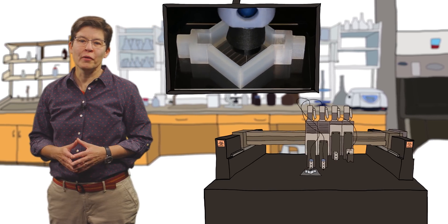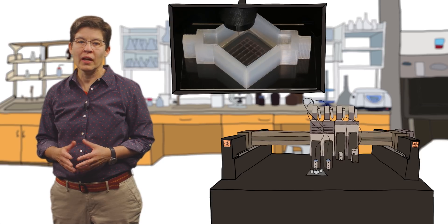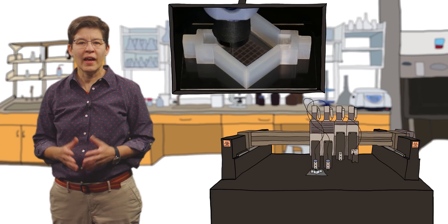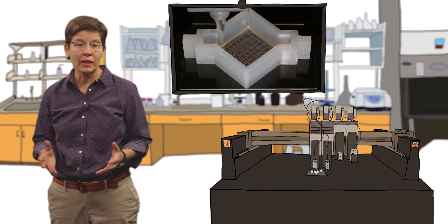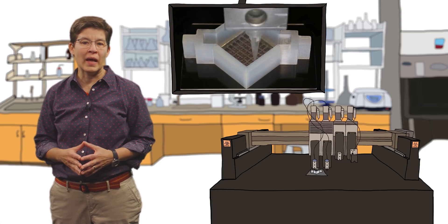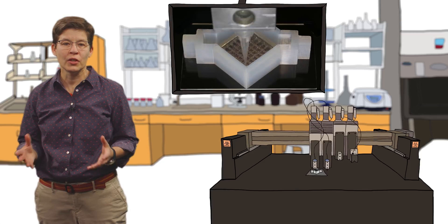At this point, we've managed to co-print cells, extracellular matrices, and the vasculature needed for controlling the local microenvironment that supports the growth and maturation of vascularized human tissues.